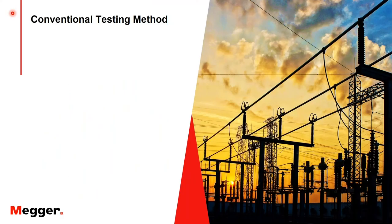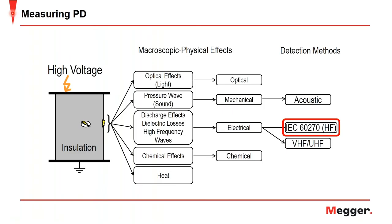Moving into the conventional test method. We have the apparatus with high voltage applied, and partial discharge activity that emits many detectable things: optical effects, pressure waves, electrical effects like dielectric losses or high frequency waves, chemical effects, and heat. Right now we're going to focus on the electrical method — specifically the IEC 60270 conventional measurement method.